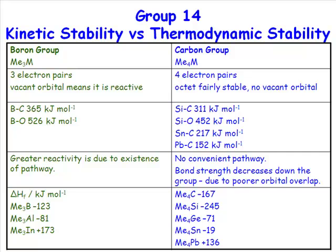Thermodynamically, tetramethylsilane is unstable with respect to its oxidation products — water, CO2, and silicon dioxide. Trimethylaluminium is similarly unstable with respect to water, CO2, and aluminium oxide. Yet one reacts spontaneously in air and the other doesn't. You and I, and these chairs and curtains, are all thermodynamically unstable with respect to our oxidation products, and yet there is no spontaneous human combustion. So if it's not thermodynamics, it's kinetics — there is a kinetic explanation why group 14 compounds are stable and group 13 compounds are not.